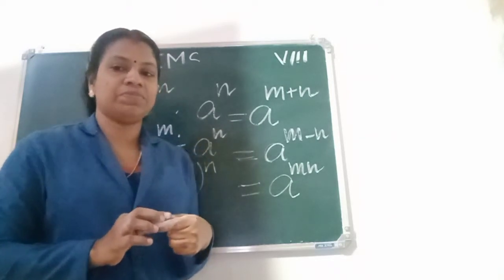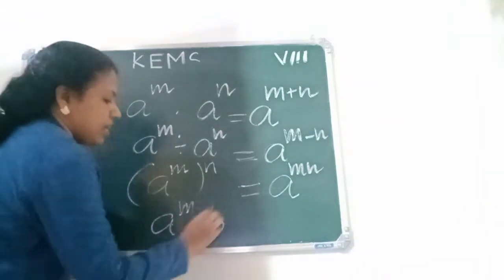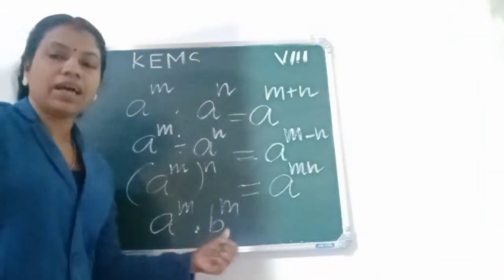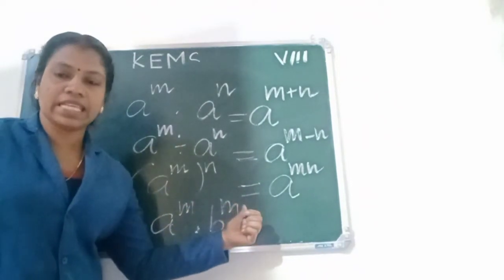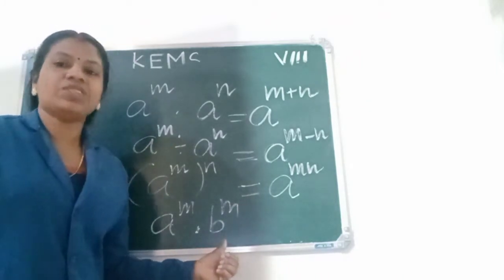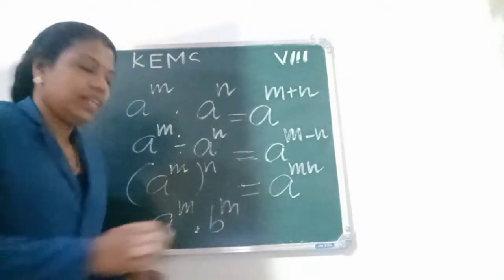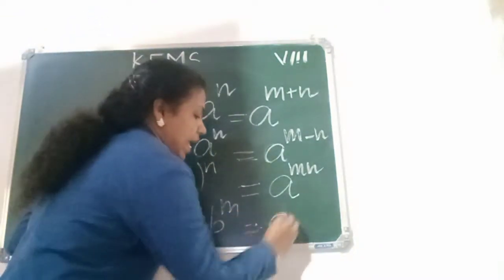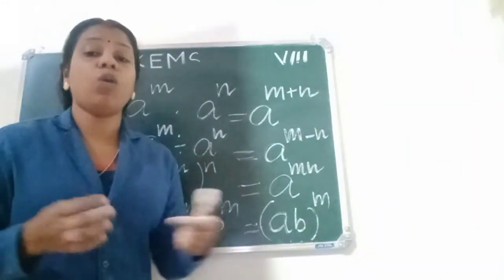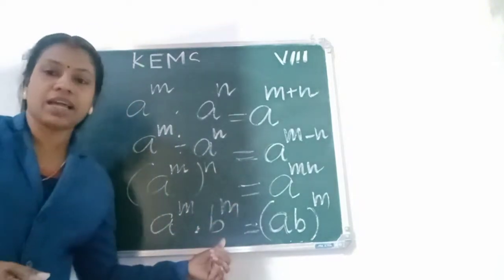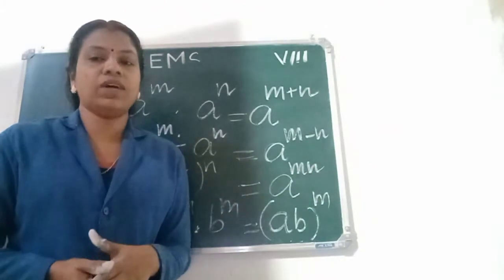Fourth law: A raised to M into B raised to M — where the powers are the same but the bases are different — equals A times B, whole power M. Because the bases are different, just multiply the bases: A into B, then whole power M.